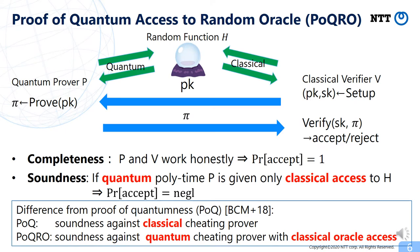From now, I will explain more technical details about our separation result. For giving our separation, we introduce a new primitive which we call proof of quantum access to random oracle, which captures the essence of the separation between ROM and Q-ROM. Intuitively, this is an interactive protocol between prover and verifier, where prover proves that it has quantum access to random oracle.